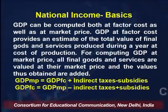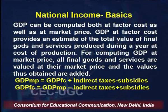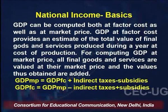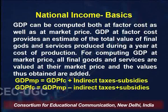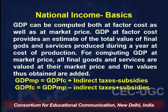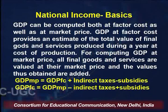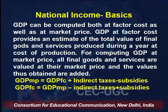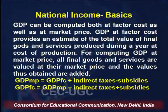According to Lipsey and Crystal, GDP is a specific measure of output in the market economy and is not a measure of welfare or happiness. GDP can be computed both at factor cost as well as market price. GDP at market price is equal to GDP at factor cost plus indirect tax minus subsidies. Similarly, GDP at factor cost equals GDP at market price minus indirect tax plus subsidies.